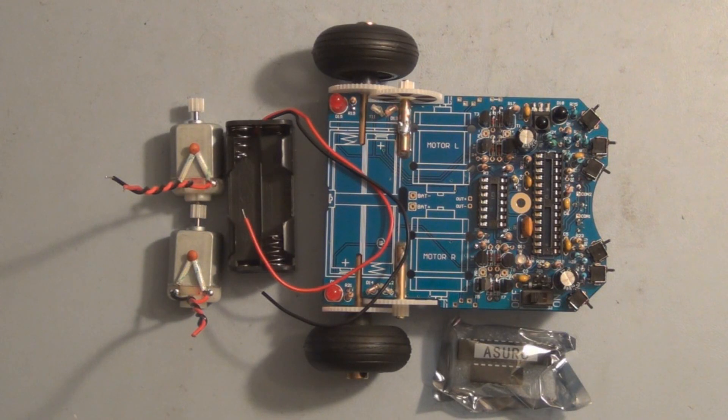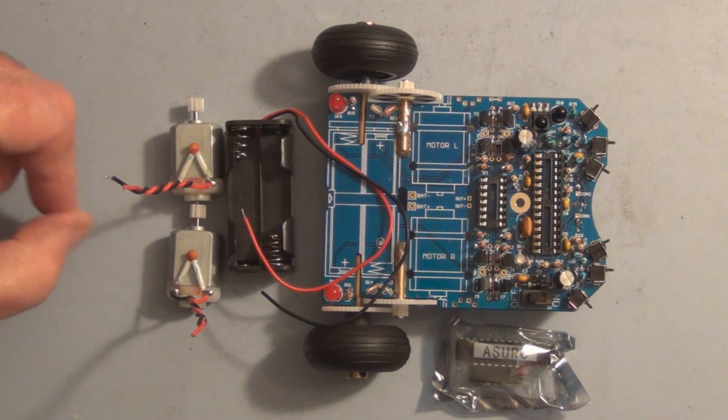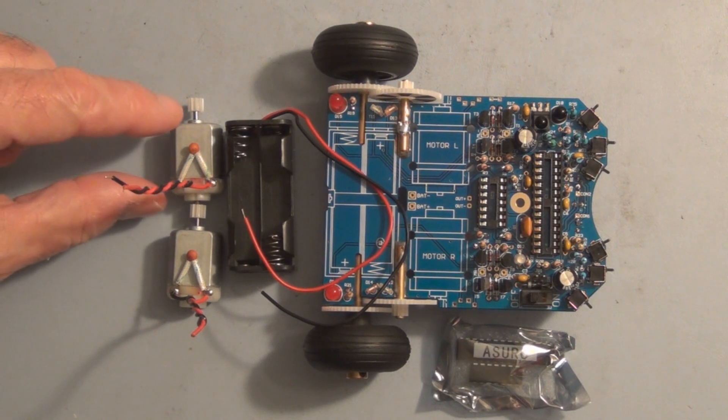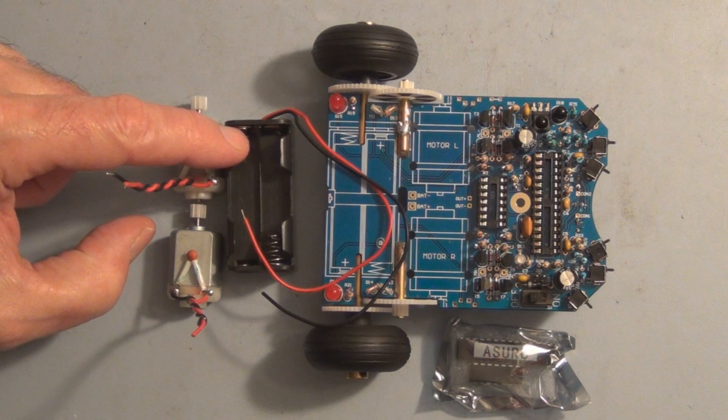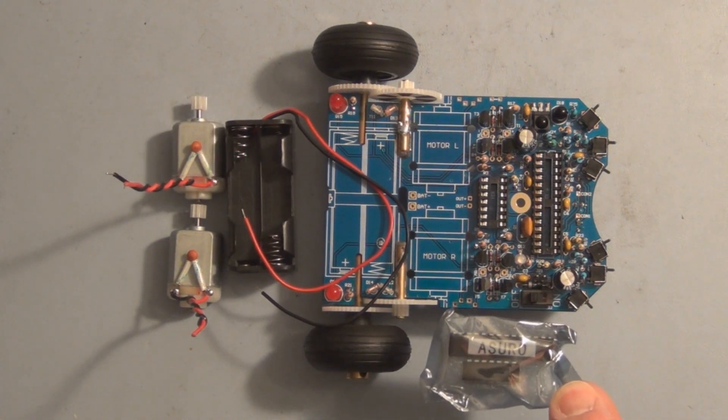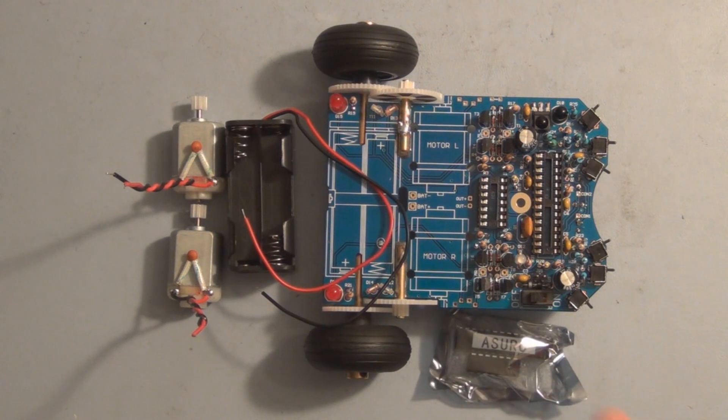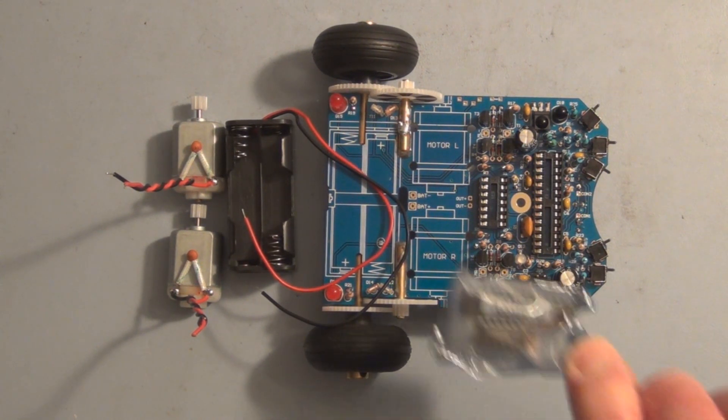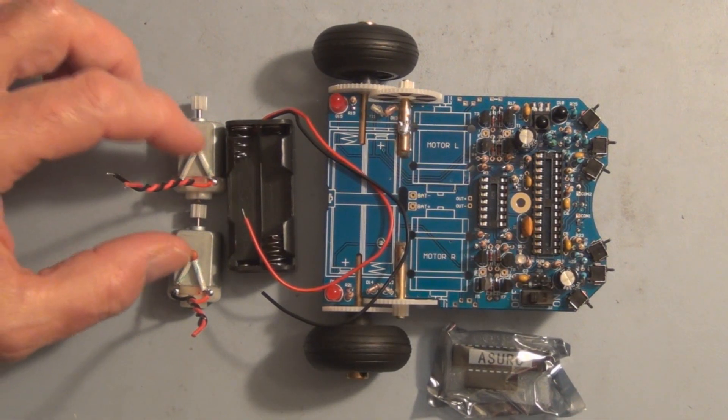Hi, welcome to my channel. If you've been following the videos on the assembly of this Asuro robot kit, welcome back. In this video I'll be adding the final components: these two DC motors, the battery holder, and the two ICs. One of them is the ATmega 8 microcontroller.